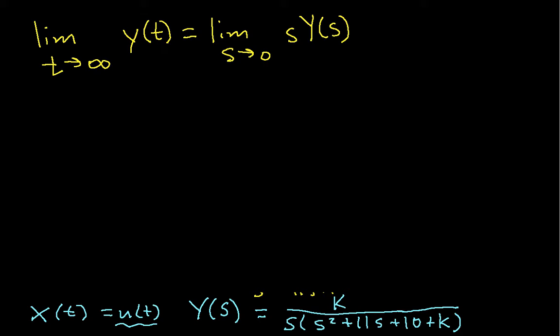So this allows us to find out the steady state value of our time function from its Laplace transform, which is a handy thing to be able to do. If we plug in the expression we have for y of S, this will be the limit as S approaches 0 of S times y of S, which is K, over S times S squared plus 11S plus 10 plus K.